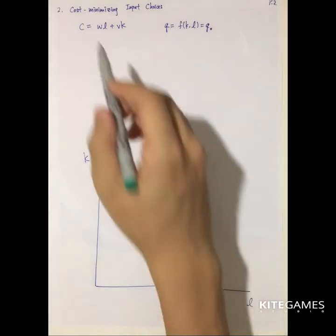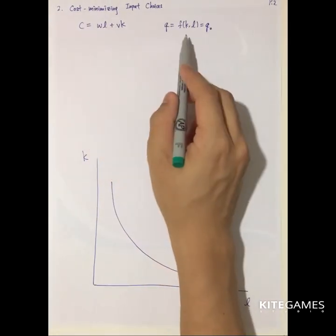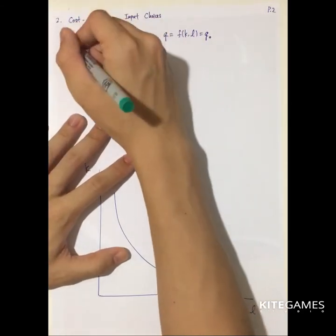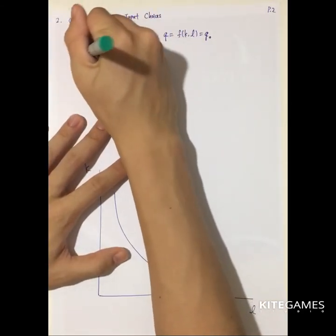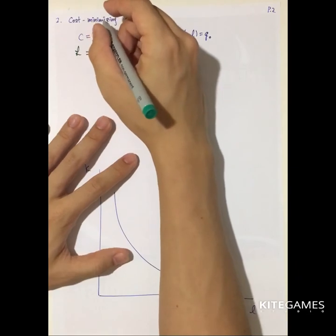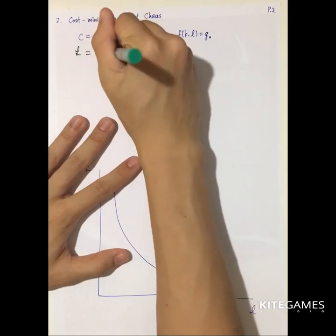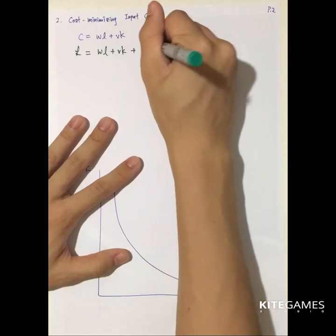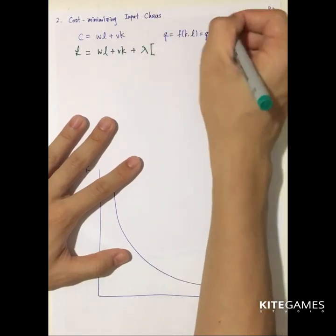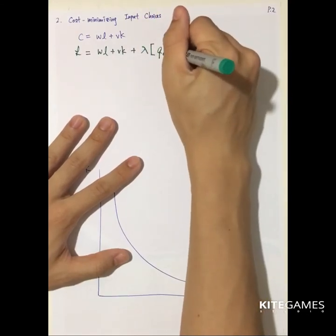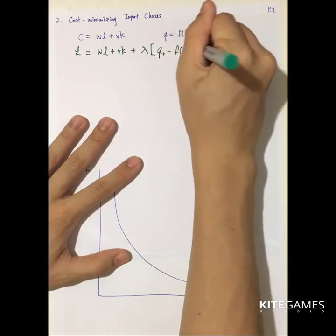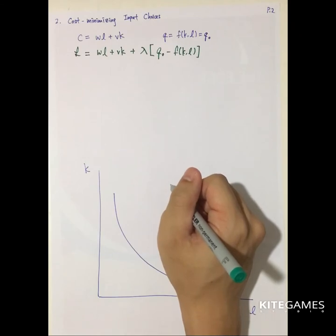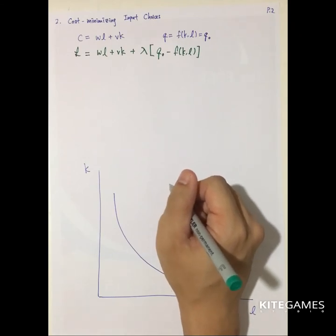Next is how we use calculus to derive the cost minimization point. We have the cost function and the production function. We set up the Lagrangian equation, where the objective function is the cost, subjected to the constraint. We put lambda times Q0 minus F(K,L). This is how we use mathematics to find the optimal K and L.